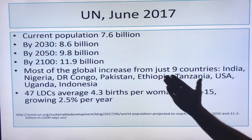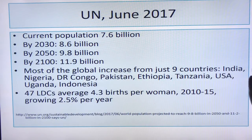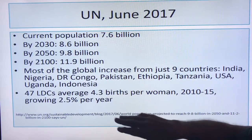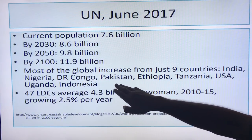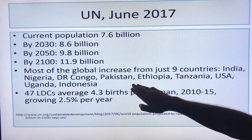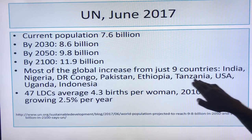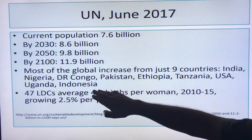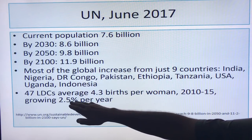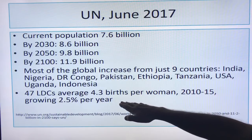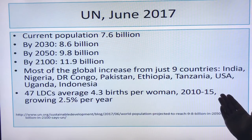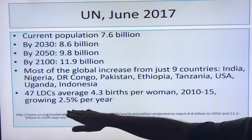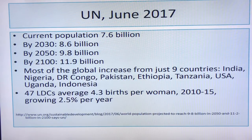Most of the global increase comes from just nine countries: India, Nigeria, Democratic Republic of Congo, Pakistan, Ethiopia, Tanzania, USA, Uganda, and Indonesia. The 47 least developed countries have an average fertility rate of 4.3 births per woman, averaged over 2010 to 2015, and are growing at 2.5% per year.